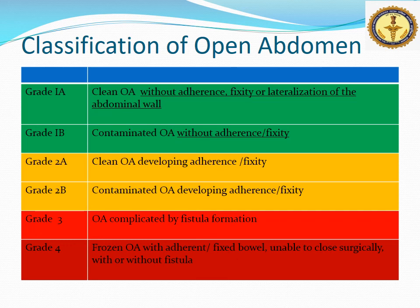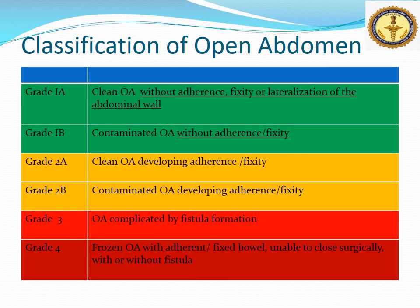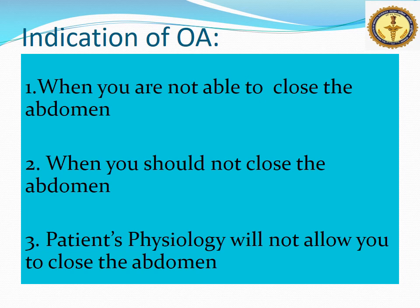Open abdomen is classified into four grades. In Grade 1 there is no adherence, no fixity, and no lateralization; Grade 1A is clean and Grade 1B is contaminated. In Grade 2, adherence and fixity start to develop; Grade 2A is clean and Grade 2B is contaminated. If a fistula forms it becomes Grade 3. Grade 4 is a frozen open abdomen with severe lateralization, almost impossible to close surgically, with or without fistula.